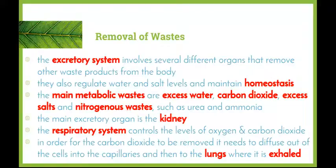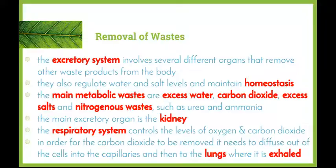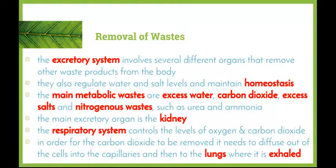We'll be looking at nitrogenous waste in more detail in the next slide and in future lessons when we specifically look at the role of the kidney. The kidneys are the main excretory organ in the body and we'll be looking at these in much more detail as we move through. The respiratory system controls the levels of oxygen and carbon dioxide - the lungs are also considered to be excretory organs as they get rid of waste, in particular carbon dioxide. In order for carbon dioxide to be removed, it needs to diffuse out of the cells and into the capillaries, then travel in the blood to the lungs where it is exhaled.